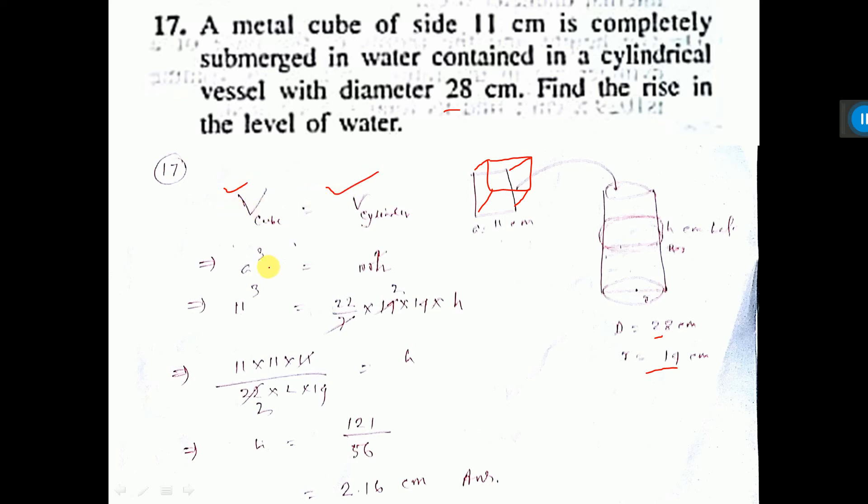Now volume of cube, that is A cubed. A is the side, I have written this is 11 cm. In the question it is given here. And cylinder formula is pi R square S. Here R is given and S we have to find out.